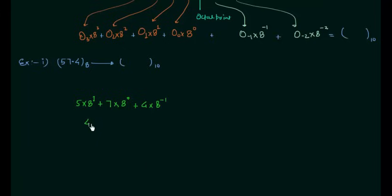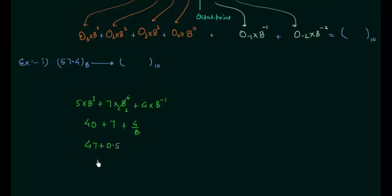Solving this: 8 raised to power 0 is 1, so 7 multiplied by 1 is 7. Then 5 multiplied by 8 is 40. We can write 8 raised to power minus 1 as 1 by 8, so 4 by 8 is 0.5. So we have 7 plus 40 plus 0.5, which gives us 47.5. This 47.5 is in decimal and this is our answer.